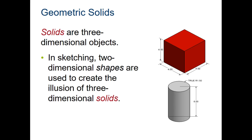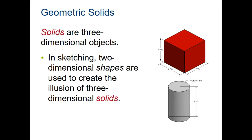When we look at geometric solids, we're talking about three-dimensional objects. When we sketch those, we're making them appear to be three-dimensional even though they're two-dimensional. So here you have these flat shapes, but they look like a cube and they look like a cylinder.